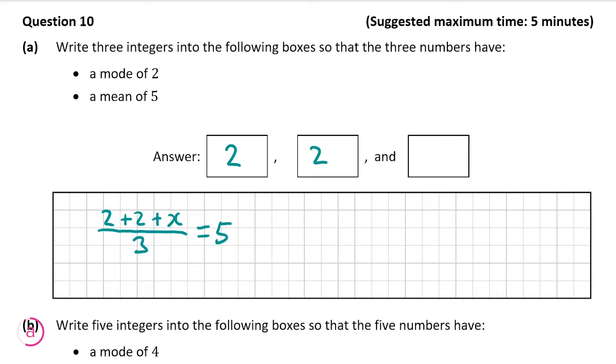So 2 plus 2 is 4, so 4 plus x divided by 3 is equal to 5. Multiplying both sides by 3 we get 4 plus x is equal to 15, and now subtracting 4 from both sides we get x is equal to 11. So therefore our third integer is 11.